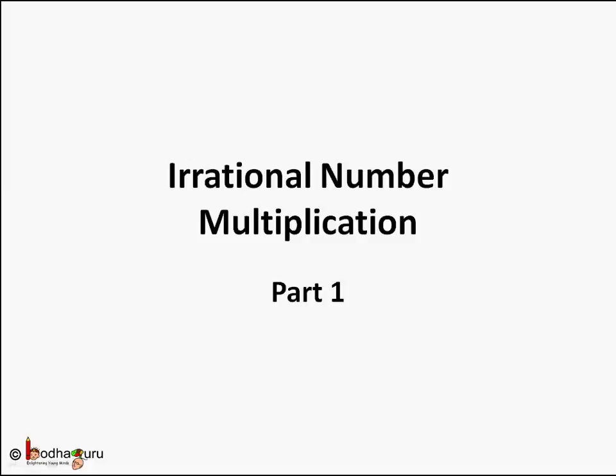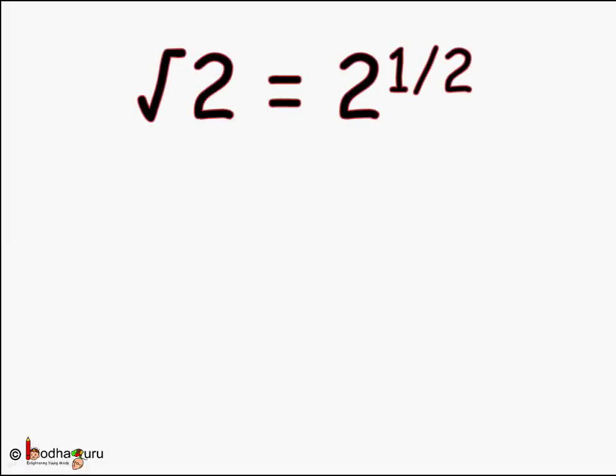Hello friends. As we saw in the last video, irrational numbers also exist on the number line just like rational numbers, and we also learned about addition and subtraction of irrational numbers. In this video we shall learn about irrational numbers multiplication. We know square root of 2 means 2 to the power 1 by 2 — that is, 2 as the base and 1 by 2 as the exponent.